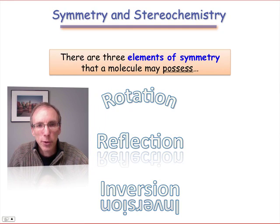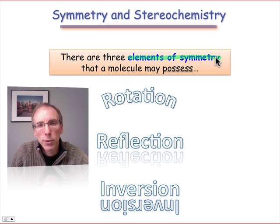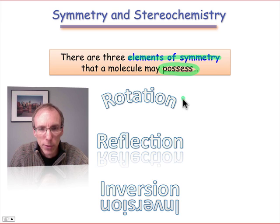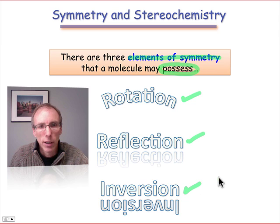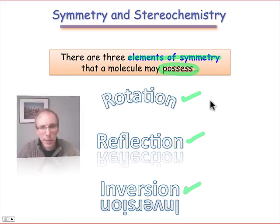To classify a molecule's symmetry, we need to determine which elements of symmetry that molecule possesses. There are three types of symmetry elements: rotation, reflection, and inversion. Let's see how we can determine which, if any, of these elements of symmetry a molecule possesses.